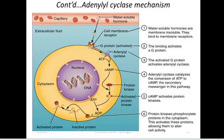Now let's look at what happens with hormones that activate adenylyl cyclase. Adenylyl cyclase is one of the most pleiotropic enzymes — meaning it comes from various sources and has various common targets. Adenylyl cyclase is a membrane-associated enzyme. Step one: water-soluble hormones cannot penetrate the phospholipid bilayer, so they bind to the membrane receptor.